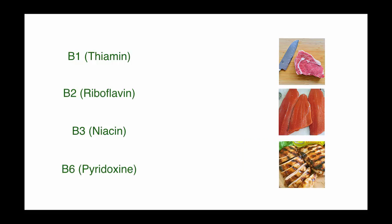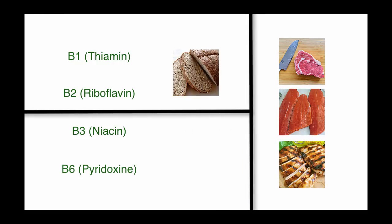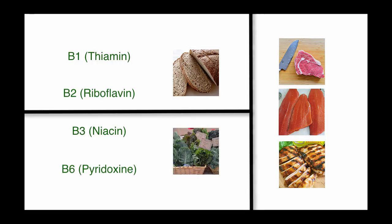All four of these B vitamins are found in large quantities in meat, fish, and poultry. But if you are a vegetarian, starches and grains are often fortified with B1 and B2, and dark greens are a good source of B3 and B6.